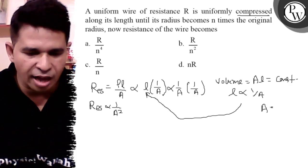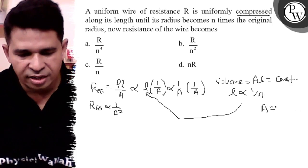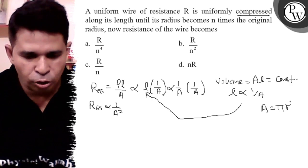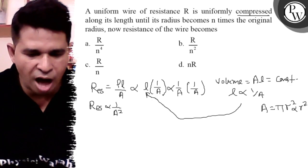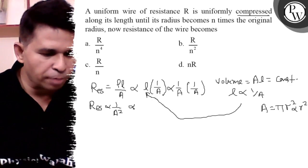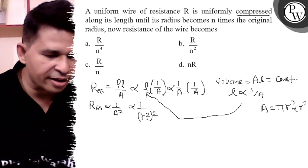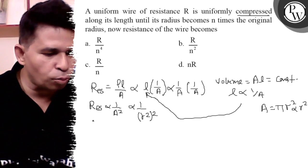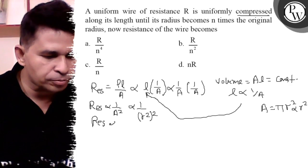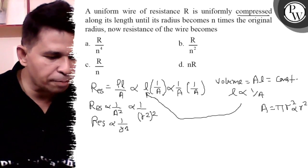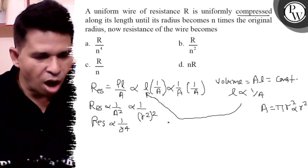But area is πR² for cylindrical wire, so it is proportional to R squared. Therefore it is proportional to 1 by R⁴, radius to the power 4. So R₁ upon R₂ equals...